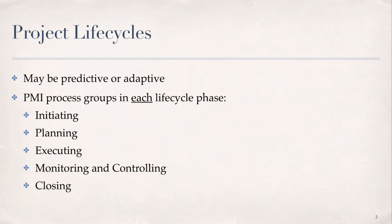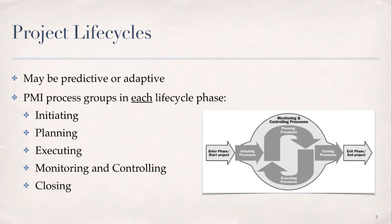PMI identifies five project management process groups that should be present in every phase of a project, namely: initiating, planning, executing, monitoring and controlling, and closing. It is very important to keep in mind that the process groups do not represent project life cycle phases in Agile project development. Furthermore, all of the process groups are represented in each iterative development cycle when working in adaptive project life cycles. An illustration of this is provided in a diagram showing a single development cycle in a project that encompasses all five of the process groups.